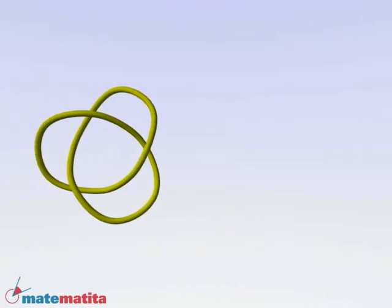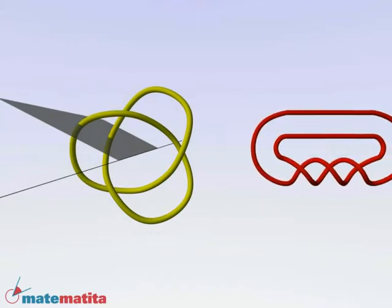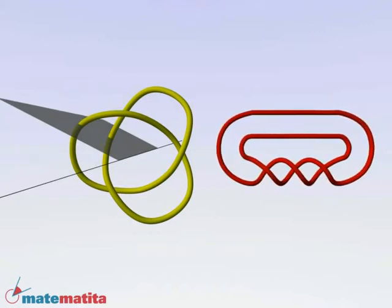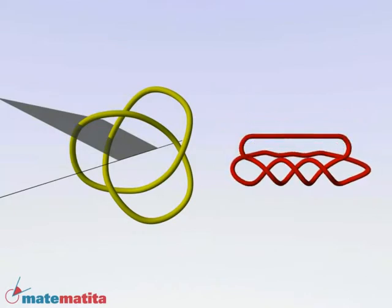Recall the Alexander theorem. Any knot can be obtained by closing a braid. We saw how to cut a knot to obtain a braid. From the closed braid, we can obtain a plat. Thus, any knot can be obtained as the closure of a plat.